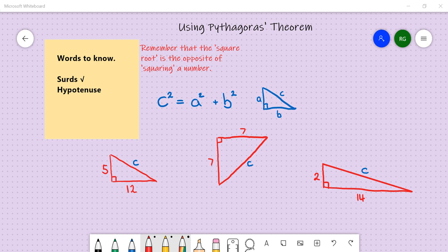Before we do that though, things that you need to remember. Hypotenuse, that's the long side of a right-angled triangle. And thirds, which are square roots.